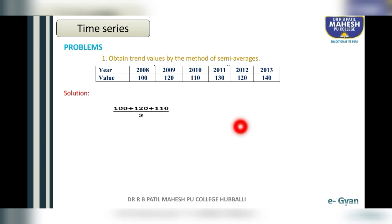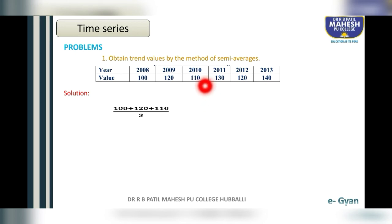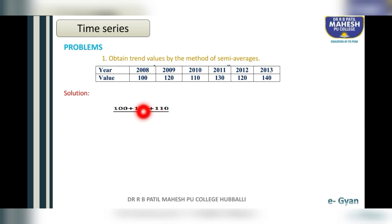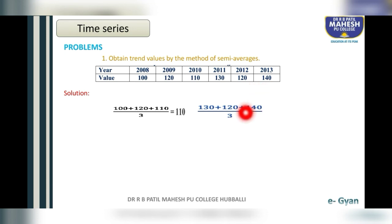Solution: from 2008 to 2010 is the first part, and from 2011 to 2013 is the second part. Take the average of the first part: 100 plus 120 plus 110 divided by 3 gives 110. For the second group: 130 plus 120 plus 140 divided by 3 gives 130. So the semi-average of the first group is 110 and of the second group is 130.